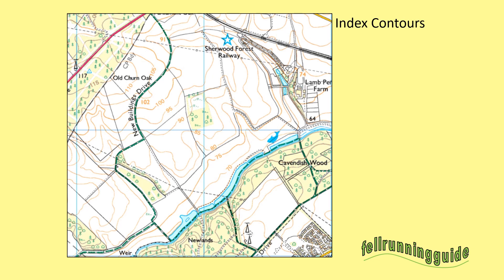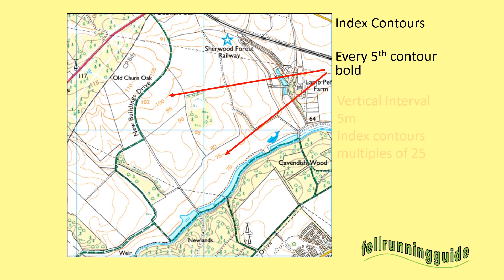What about index contours? On Ordnance Survey maps every fifth contour is bold — slightly darker or thicker than the other contour lines. If the vertical interval is five metres, then the index contours go up in multiples of 25. So, for example, starting at zero you'd have 25, 50, 75, 100, etc.